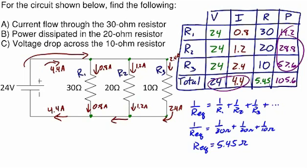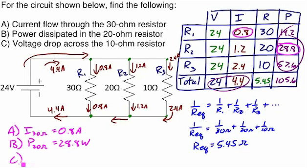So to answer the questions that we were initially asked: A, we wanted to know the current through the 30 ohm resistor. Current through the 30 ohm resistor, I just look up. For our 30 ohm resistor, that's R1, the current was 0.8, so that's 0.8 amps. B asked for the power dissipated in the 20 ohm resistor, that's R2, so the power in R2 was 28.8 watts. And finally, we were asked to find the voltage drop across the 10 ohm resistor. The 10 ohm resistor is R3, the voltage drop is 24 volts.